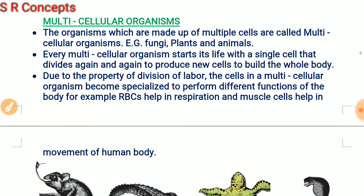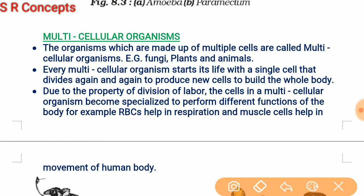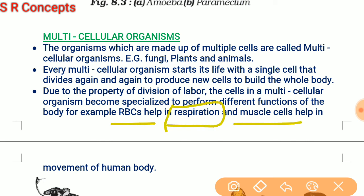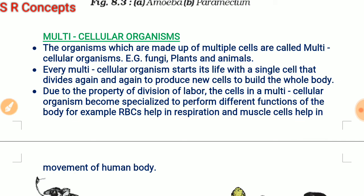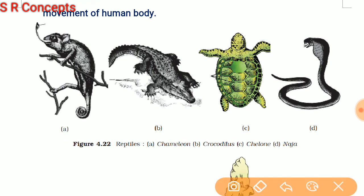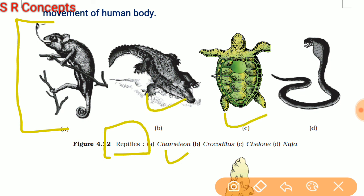In multicellular organisms, there is also a division of labor. The different cells become specialized to perform different functions of the body. For example, in a multicellular animal, RBCs carry respiratory gases and muscle cells help with movement. Similarly, in plants, different cells perform different functions. Examples of multicellular organisms include reptiles like chameleons, crocodiles, and snakes.